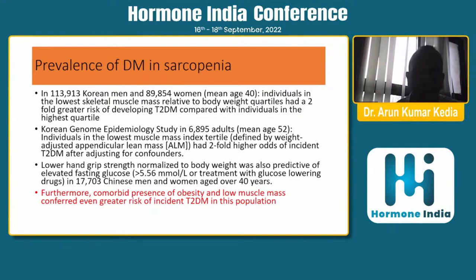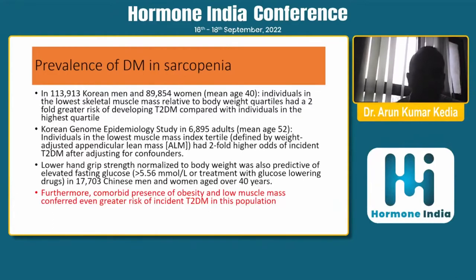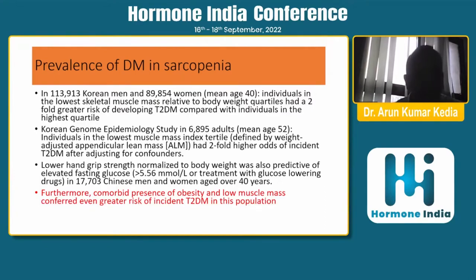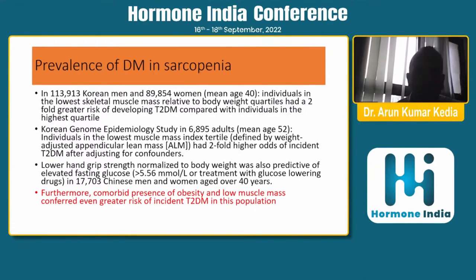Looking at the prevalence of diabetes in sarcopenia: a large Korean study of adults above 40 years showed that individuals in the lowest skeletal muscle mass quartile had a two-fold higher risk of developing type 2 diabetes. The Korean Genome Epidemiology Study also showed that the lowest muscle index patients had two-fold higher odds of incident type 2 diabetes. Additionally, lower hand grip strength was predictive of elevated fasting glucose in over 17,000 Chinese men and women aged over 40 years. The risk is even greater when sarcopenia coexists with obesity due to metabolic syndrome.